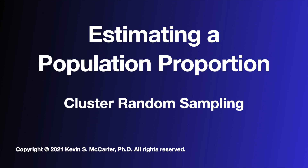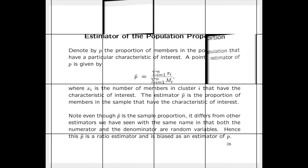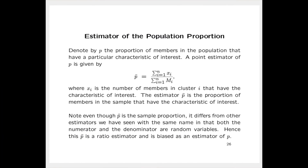Now we look at how to perform inferences about a population proportion using cluster random sampling. Denote by p the proportion of members in the population that have a particular characteristic of interest.